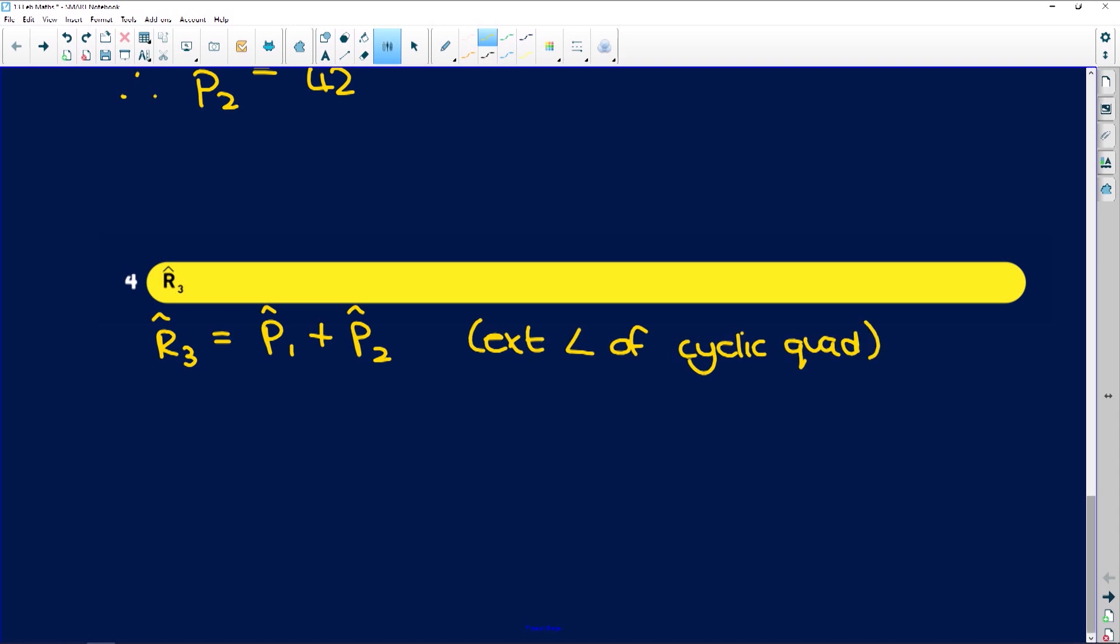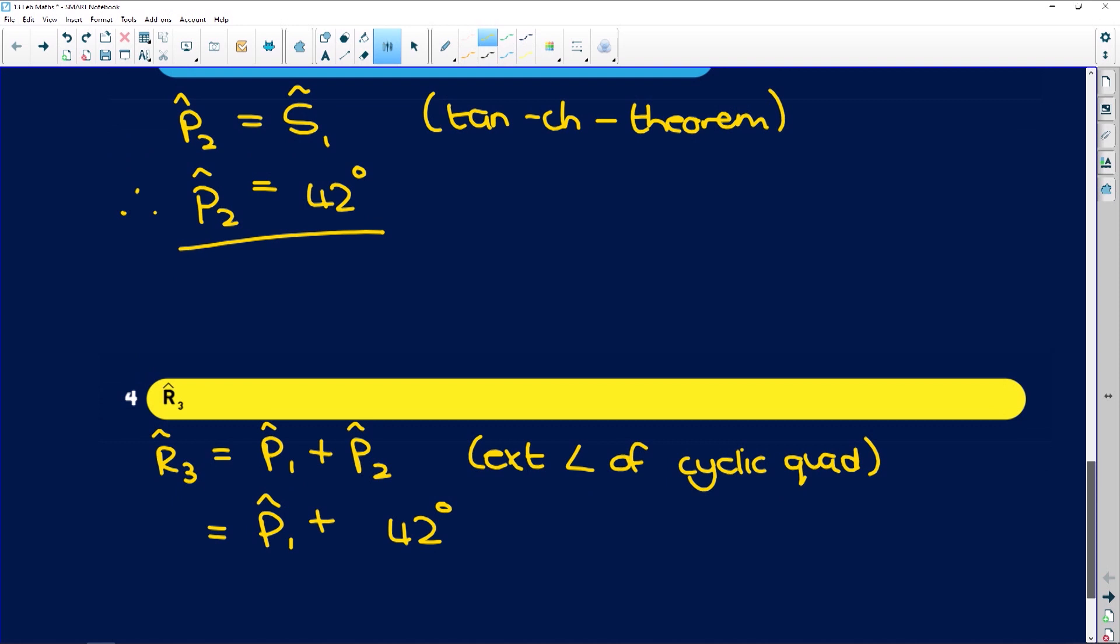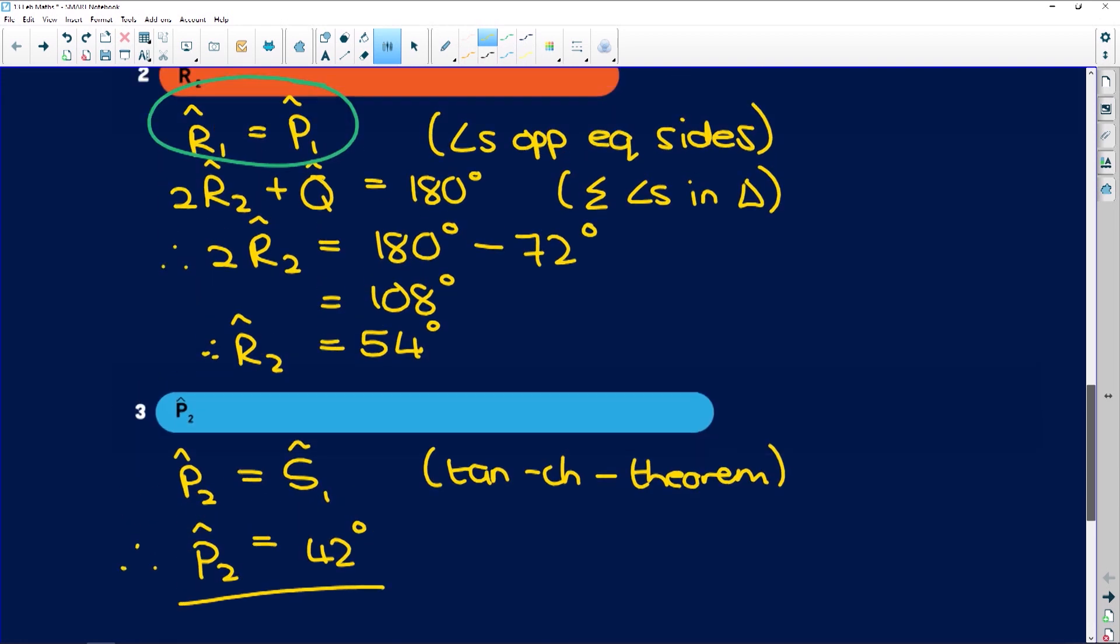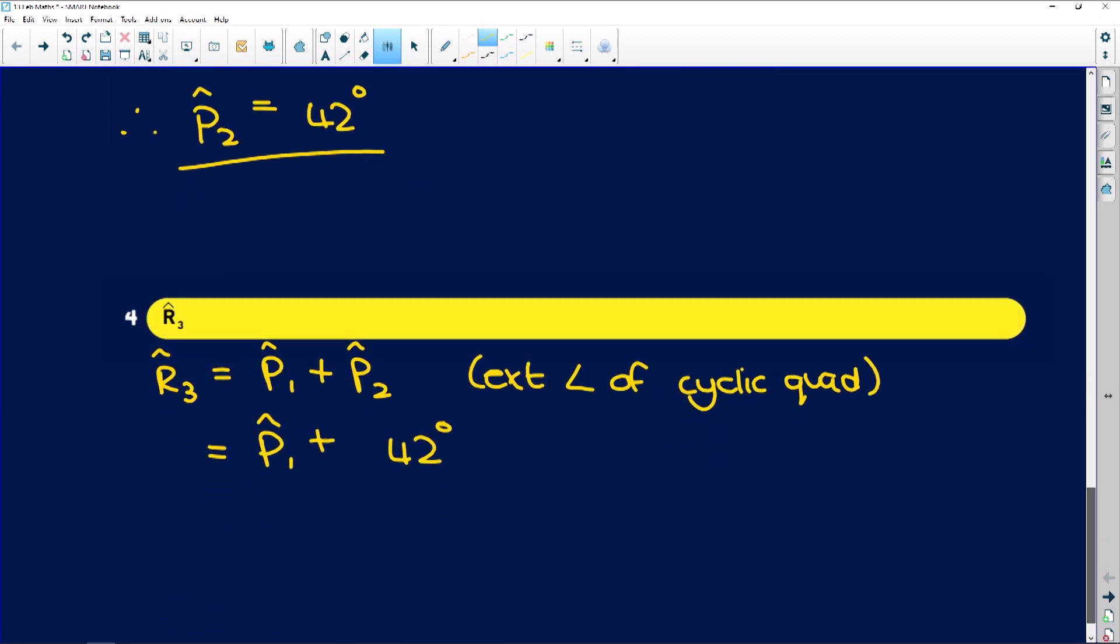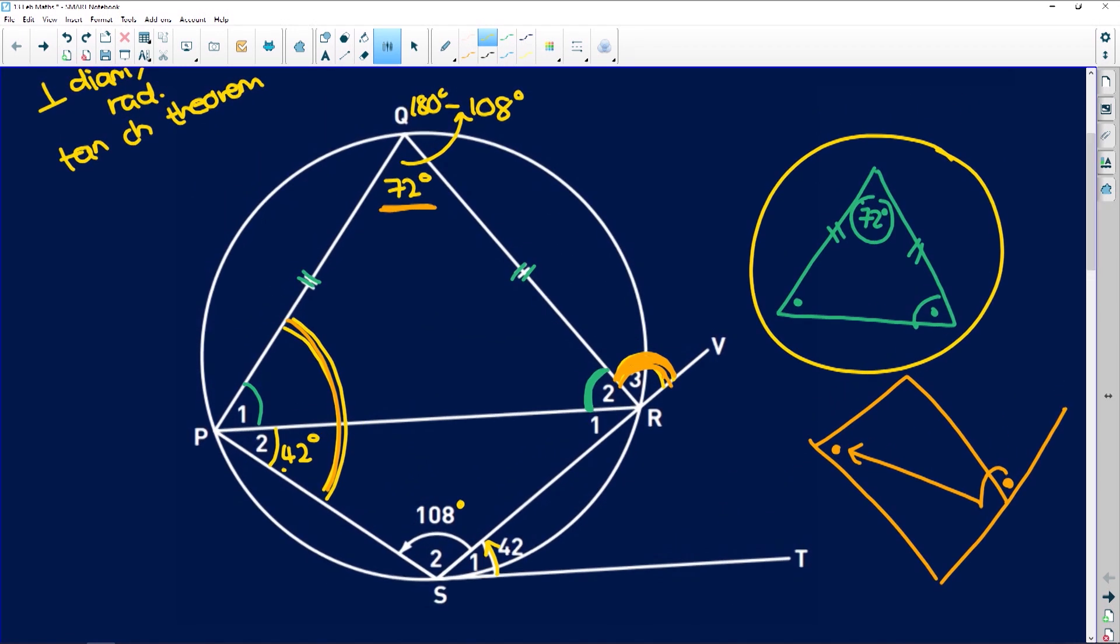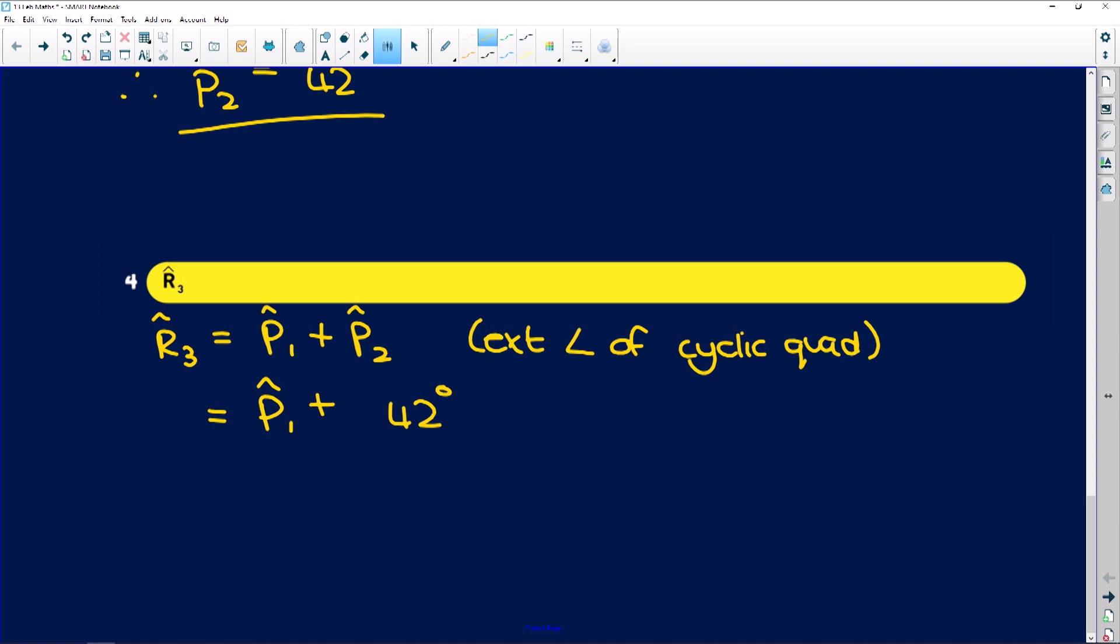So, let's take a look. R3 is equal to P1 plus P2 exterior angle of a cyclic quad. Okay. And we found P2 in our previous question. We found that it is 42 degrees. So, we know that it is something plus 42 degrees. But now, remember, let's put in P1 for now. Right at the beginning, we said over here that P1 is equal to R1. Why? Because of angles opposite equal sides. So, R1 is equal to P1. And R1 we found, let's take a look over here. Okay. Not R1. P1 is equal to R2. Okay. And R2 we found is 54. So, 54 degrees. You've already proven that these angles are equal because of your isosceles triangle. Okay.